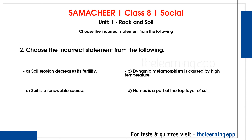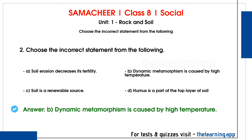Second question, choose the incorrect statement. Option A: Soil erosion decreases its fertility — this is correct. Option B: Dynamic metamorphism is caused by high temperature — this is the wrong statement. Dynamic metamorphism is caused by high pressure, while thermal metamorphism is caused by high temperature. Option C: Soil is a renewable source — this is true. Option D: Humus is a part of the top layer of soil — this is also true. So the incorrect statement is option B.